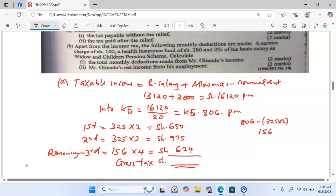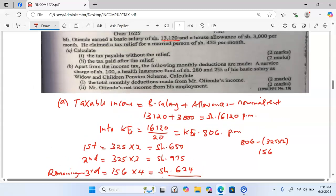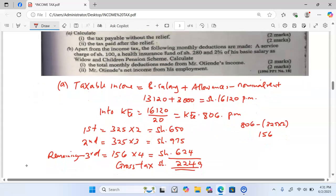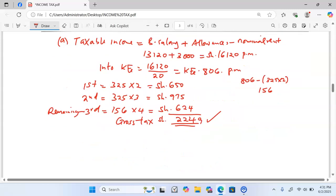In shillings, 650, 975, 624 will give us a total of 2,249. And this is what the question wants us to calculate. That is already part A worked out. That is part A Roman 1.